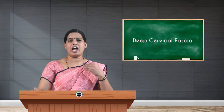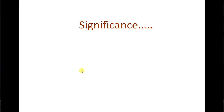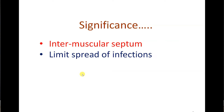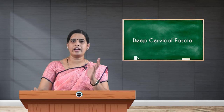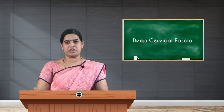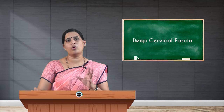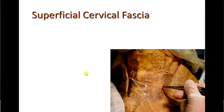The significance of fascia is that it forms septa, isolates structures, and forms intermuscular septa. It also limits the spread of infections, though sometimes abscesses can digest the fascia and cross the fascial layers. It also provides slipperiness, allowing structures to glide or move over one another.